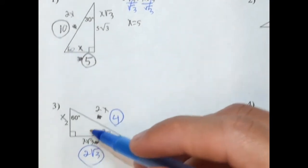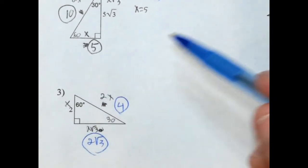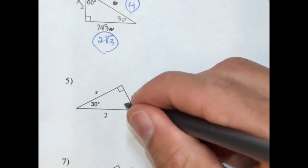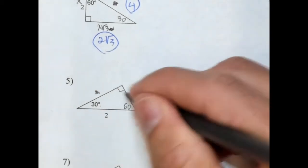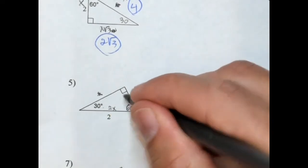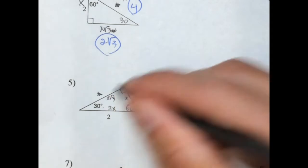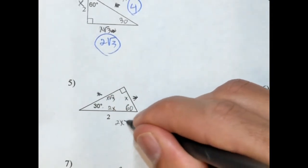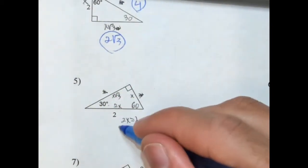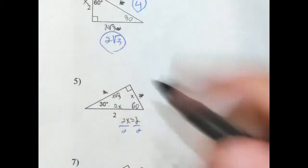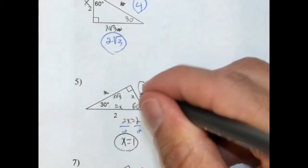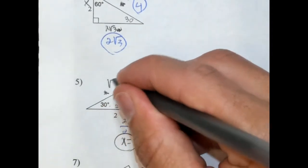It's really nice when it's just an integer and they give you the shorter leg. Alright, number 5. So we have 30 here, this will be 60. Let's cross out our variables. So this is 2x because that's the hypotenuse, this will be x, and this will be x radical 3. So 2x equals 2 — divide both sides by 2 to solve for x — and x is equal to 1. So that means this side is 1, and this is x radical 3, so 1 radical 3 is just radical 3.